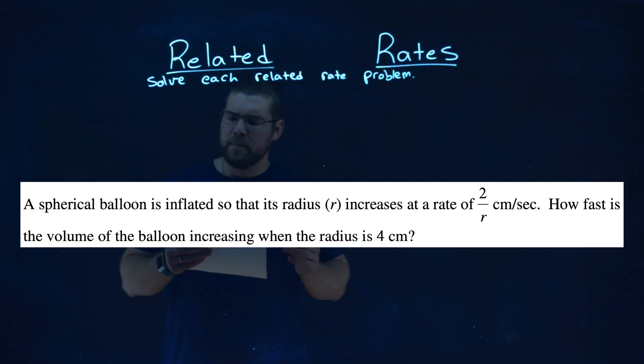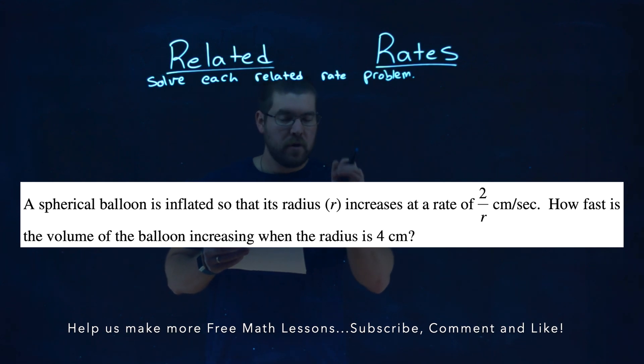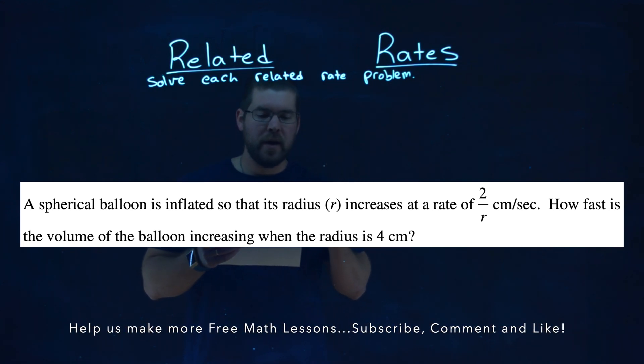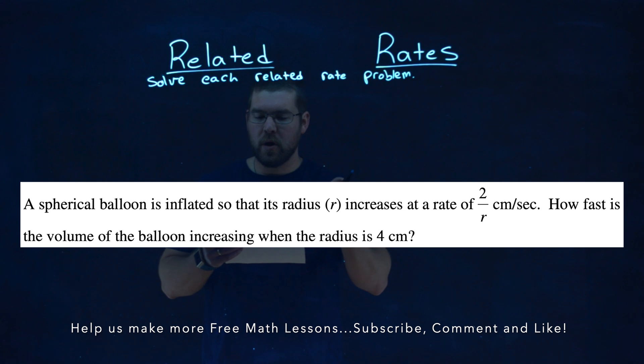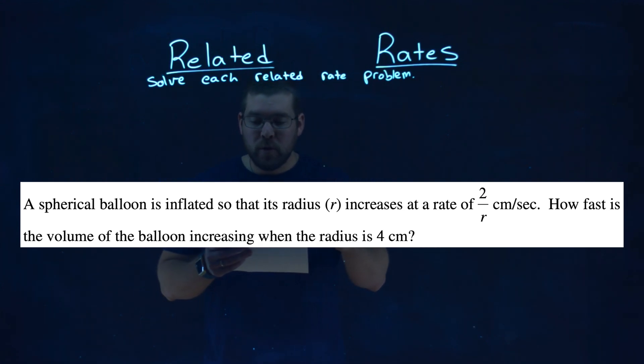We're given this problem right here. A spherical balloon is inflated so that its radius r increases at a rate of 2 over r centimeters per second. How fast is the volume of the balloon increasing when the radius is 4 centimeters?